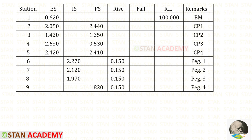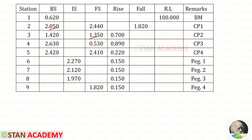We now need to find the remaining rise and fall values. This minus this gives a negative value, so that should go in the fall column. This minus this gives a positive value, so that goes in the rise column. This minus this also gives a positive value, so that is also a rise.